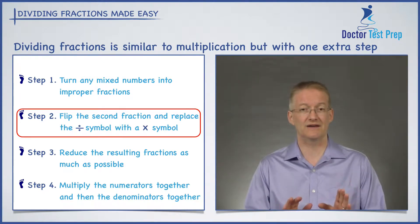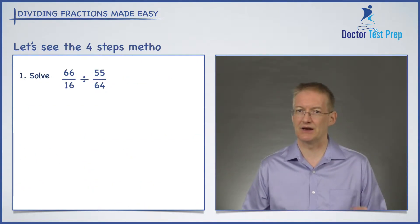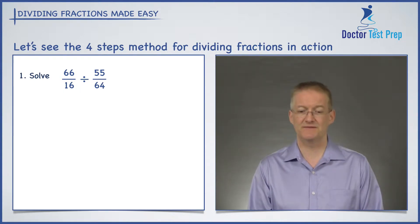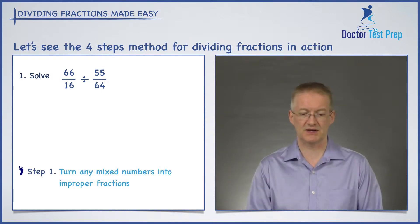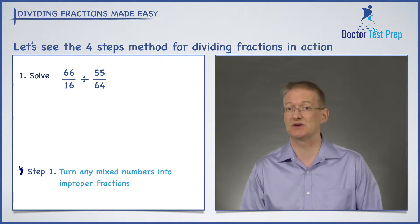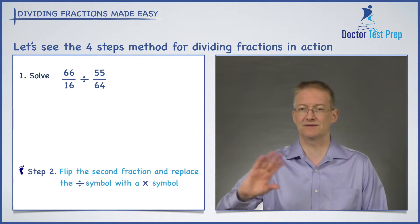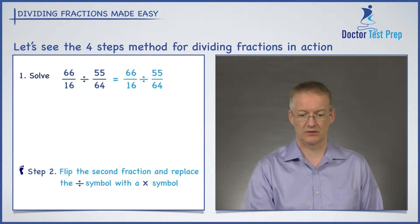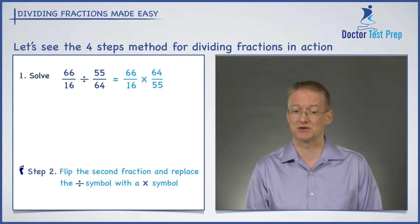All we have here that's different from multiplication is step number two. So let's see this in action. Number one: we have 66 over 16 divided by 55 over 64. Step number one was to turn any mixed numbers into improper fractions — we don't have any mixed numbers here, so we don't need to worry about that. Step number two: take the second fraction and flip it upside down and replace the divide by a multiply. So we're going to take that 55 over 64 and convert it into 64 over 55, and then the divide becomes a multiply.